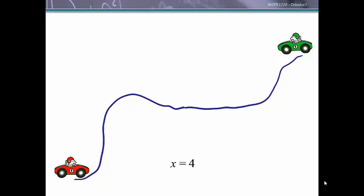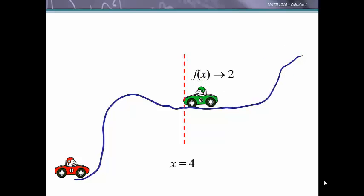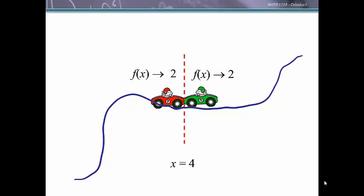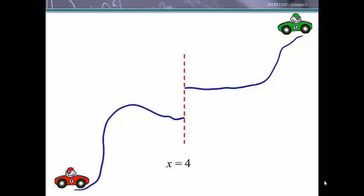So let's say we have a function and we're interested in what the function does as we approach the x value of 4. We can follow the function from the right hand side and see that we are approaching a function value, or a y value, of 2. If we moved along the function from the left hand side, we see that we also approach the same function value of 2. So we say the limit of this function as x approaches 4 is 2, because as we get nearer and nearer to x equals 4 from either side, we're getting closer and closer to the function value 2.